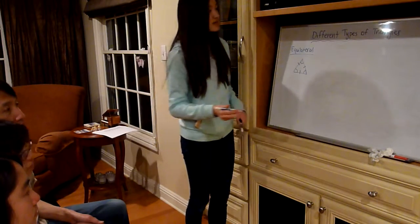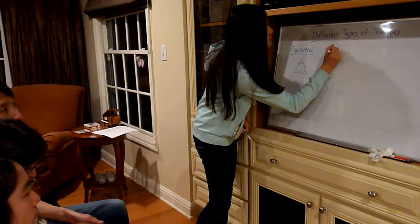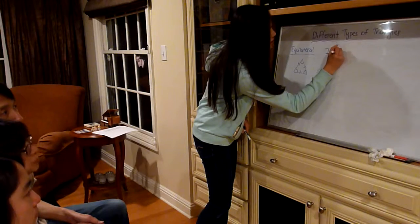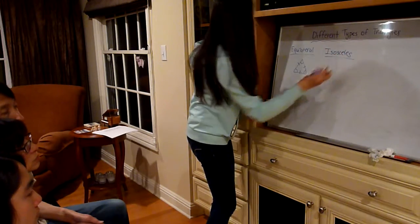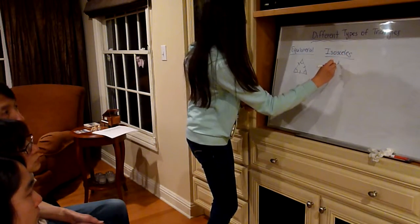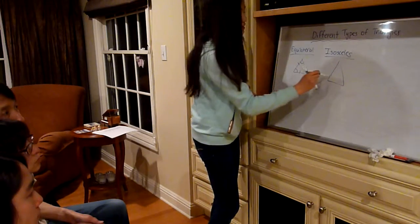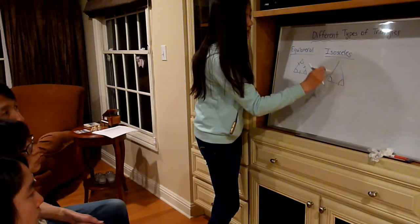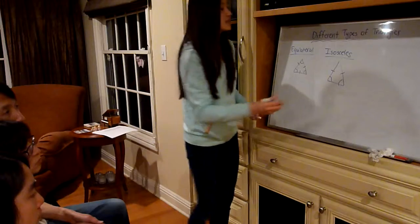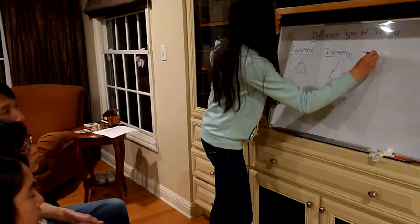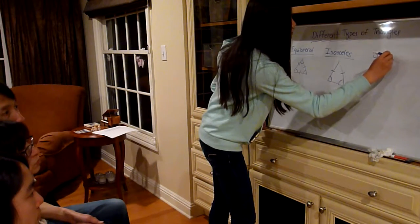An isosceles triangle has two equal sides and two equal angles. And a scalene triangle has no equal sides or equal angles.